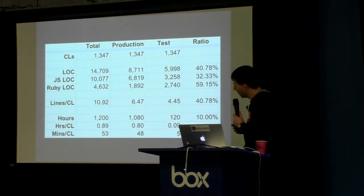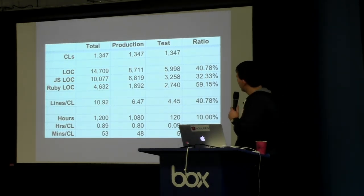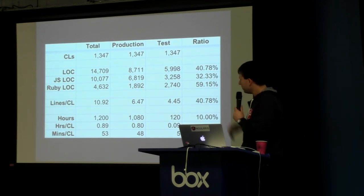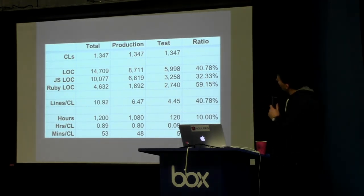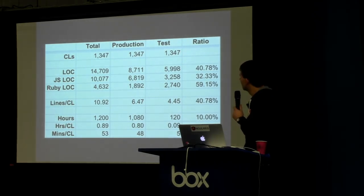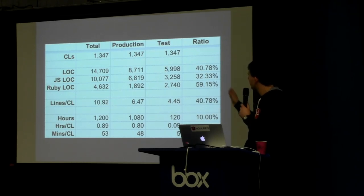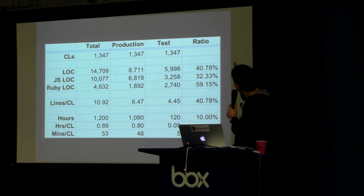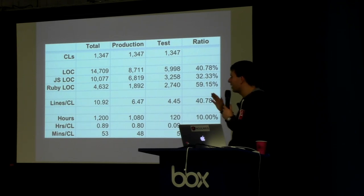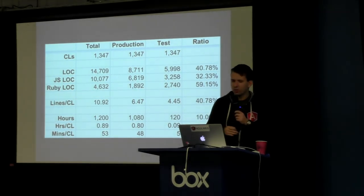I want to give you some real numbers from the AngularJS project. It shows lines of code, and specifically CL is terminology for change list — an individual commit. I analyzed my commits and came to the conclusion there are about 1,300 commits. You can see the number of lines of code, which portion is JavaScript and Ruby, and the ratio between production and test code. Basically you see there's approximately a one-to-one correspondence between lines of test code and lines of production code.